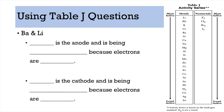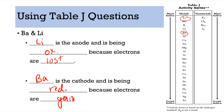Next pair: barium (Ba) and lithium (Li). Lithium is even higher on Table J. So lithium is the anode — it is oxidized and electrons are lost. That means barium will be reduced and electrons are gained.